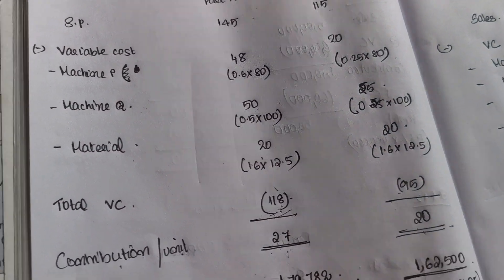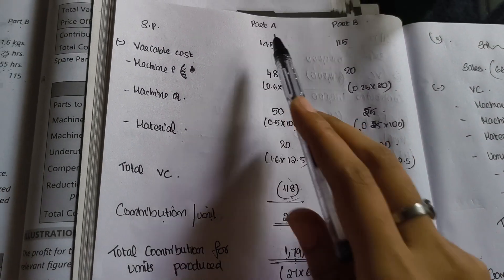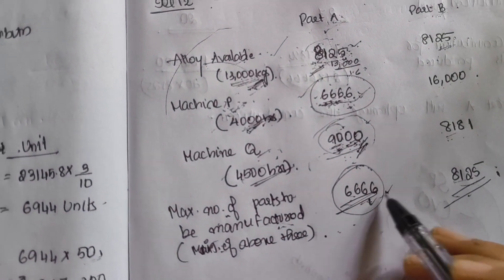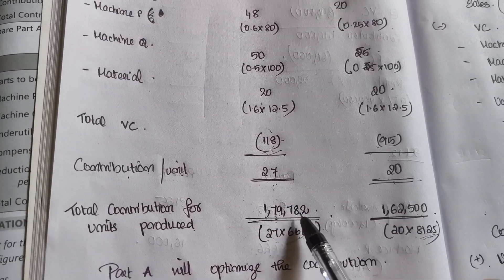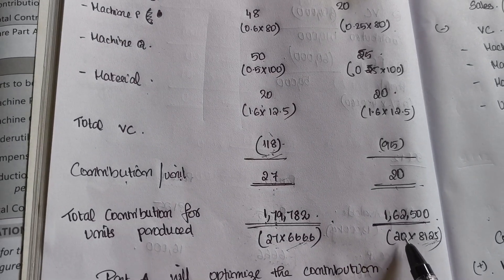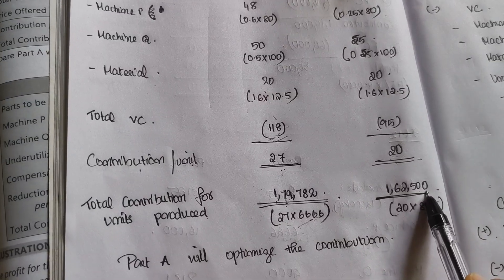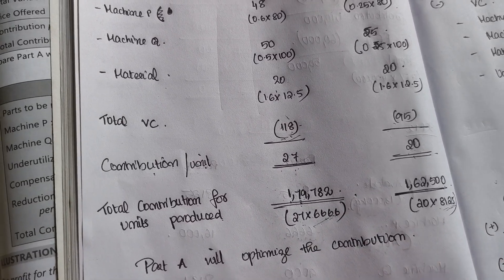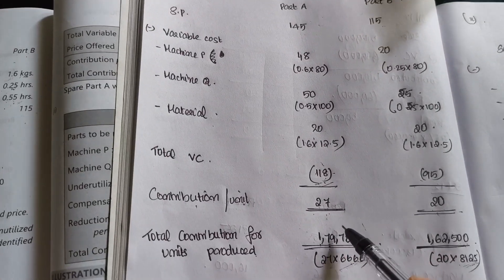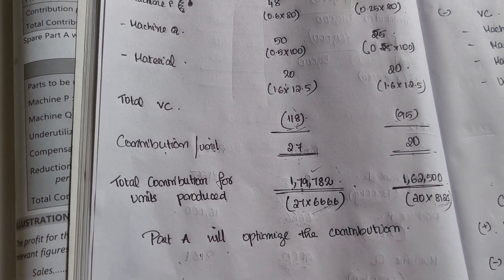Now we can find the total contribution. For part A: 6,666 units × Rs.27 = Rs.1,79,782. For part B: 8,125 units × Rs.20 = Rs.1,62,500. The maximum total contribution is from part A. So part A will optimize the contribution — that is the answer to the first question.